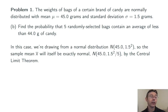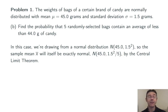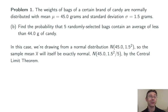In this case we're drawing from a normal distribution, so that approximation from the central limit theorem is going to be exact — x-bar is itself going to be exactly normal. The mean is going to be the same as the population mean, 45. The standard deviation is going to be scaled down by a factor of 1 over the square root of n, so the variance is going to be 1.5 squared over 5, and the standard deviation will be 1.5 over the square root of 5.